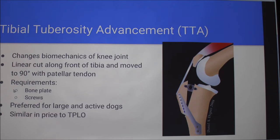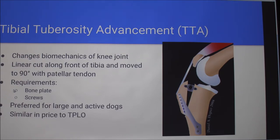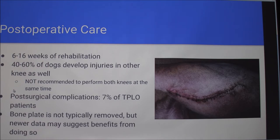The TTA is the newest one and is pretty similar to the TPLO as far as price and the types of dogs it's used for. They do the same thing of changing the biomechanics of the knee, but they make a cut along the front of the tibia and move that forward to make the angle with the patellar tendon, then put it in place with a bone plate and screws. The decision between TTA and TPLO depends on the specific dog and the doctor's preference.